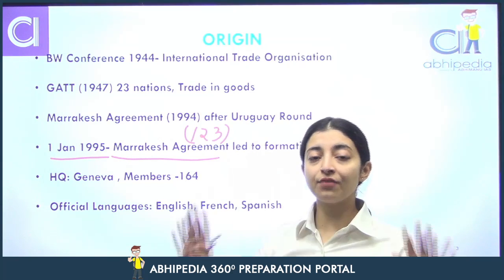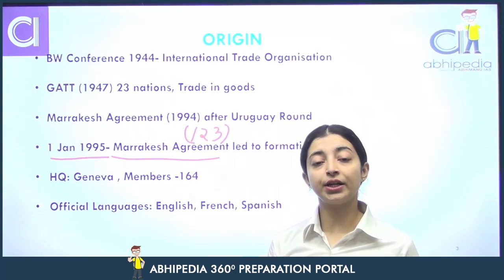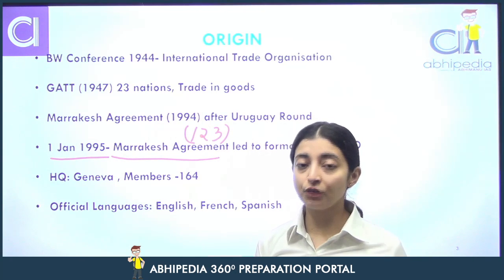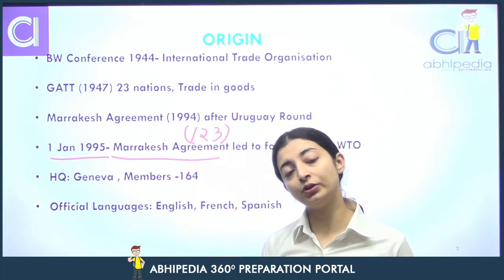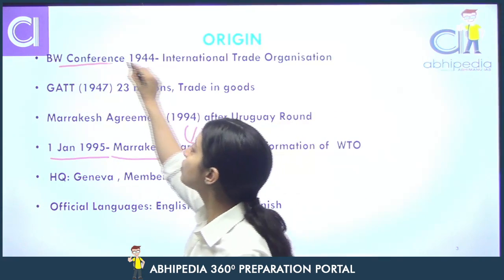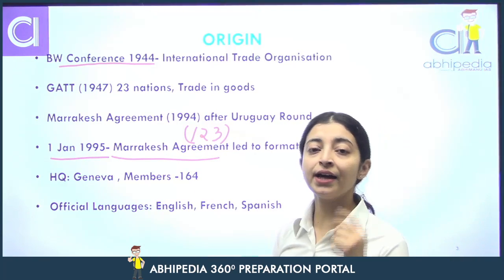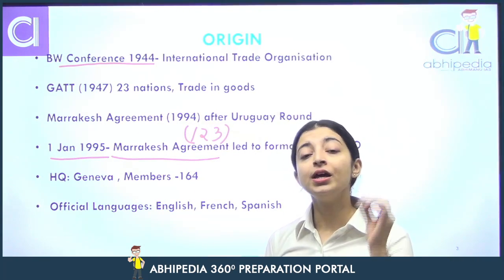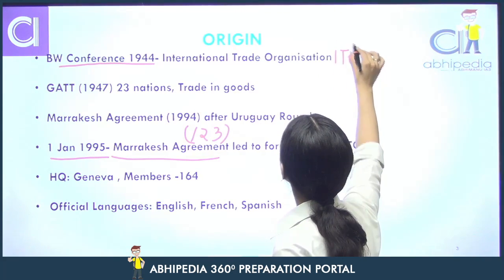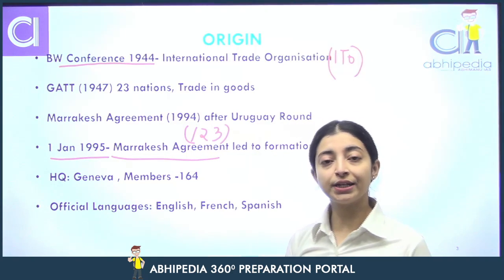Ek organization, ek world level pe, global level pe, ek organization ki baat hoi thi to regulate trade in the Bretton Woods Conference. Bretton Woods Conference 1944 mein hui thi. As a result, do bodies nikal ke aayi thi: IMF aur IBRD. Is conference ne ek third body ki bhi baat ki thi jiska naam tha ITO — International Trade Organization. Toh humne kaha ki trade ko regulate karne ke liye ek body bhi banate hain.